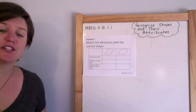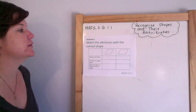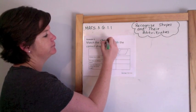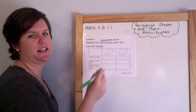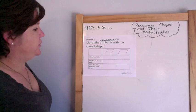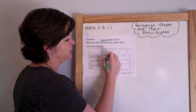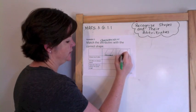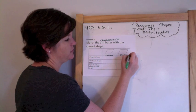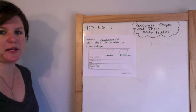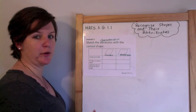Example three. Match the attributes with the correct shape. Attributes are a fancy word for characteristics. So it looks like this would be the rhombus, and this would be a parallelogram.